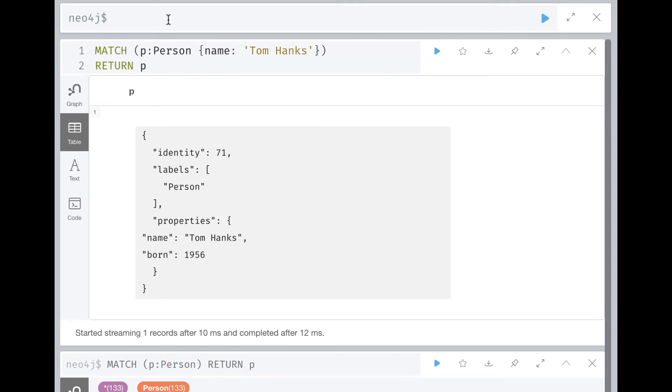You may want to return specific properties. You can use the p variable to specify which property to return.